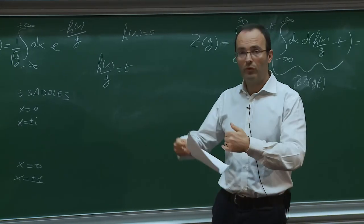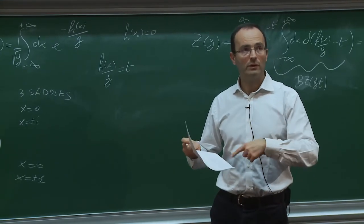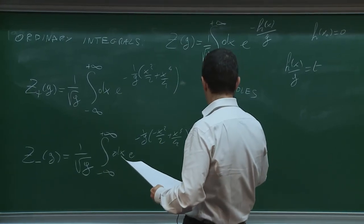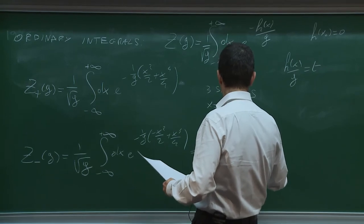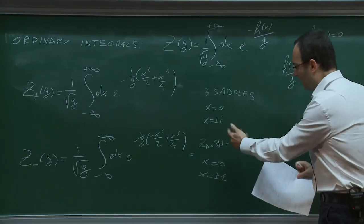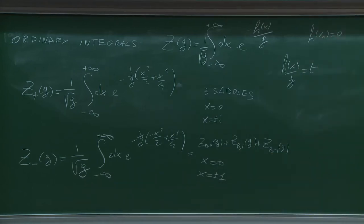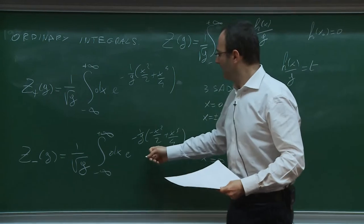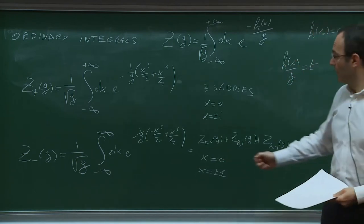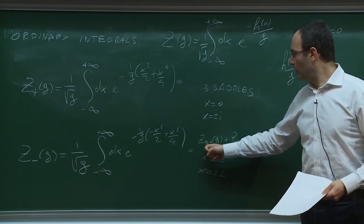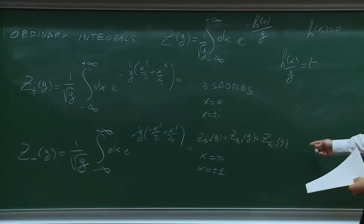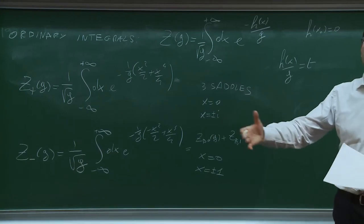In the broken phase you must deform the contour using Picard-Lefschetz theory. The result is then given by a sum: Z_B(0) + Z_B(1) + Z_B(−1) with appropriate signs — three asymptotic series. This is a simple instance of resurgence: the theory is not Borel summable from one series alone; you need three asymptotic series with cancelling ambiguities.